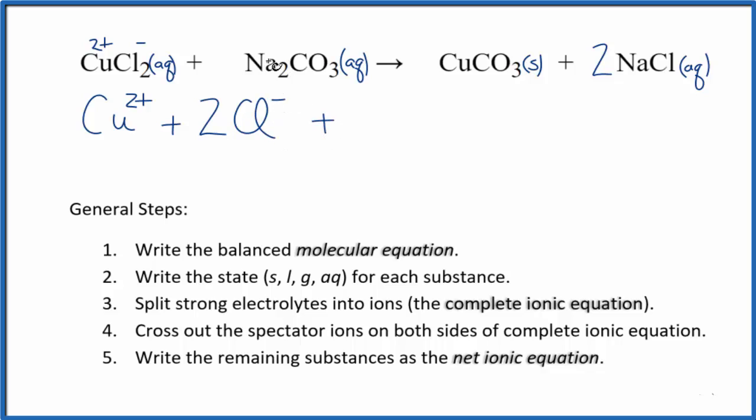Sodium, group 1, that's 1 plus. And the whole carbonate ion, 2 minus. That's a good one to memorize. So two sodium ions. And then we have the carbonate ion, CO3 2 minus. These are the reactants in our net ionic equation.